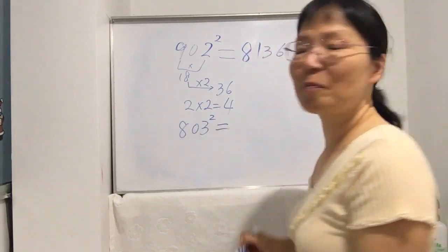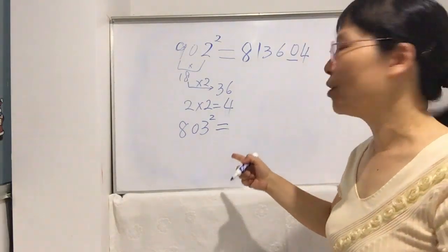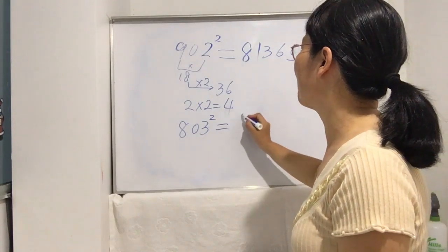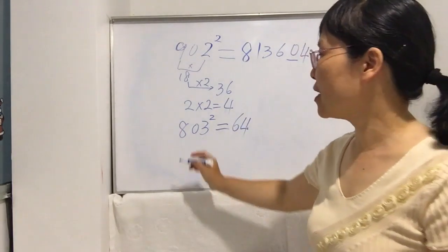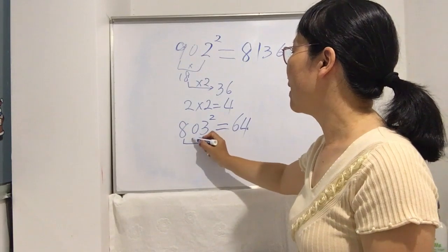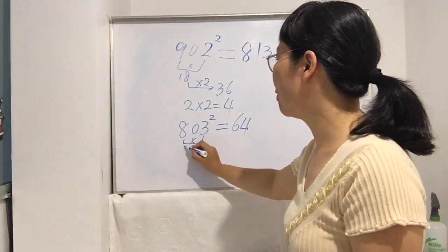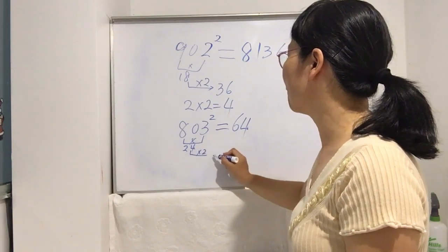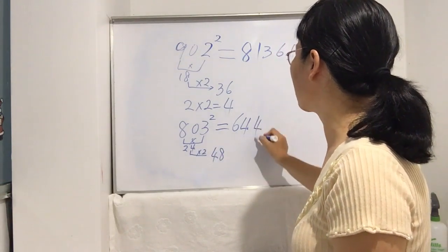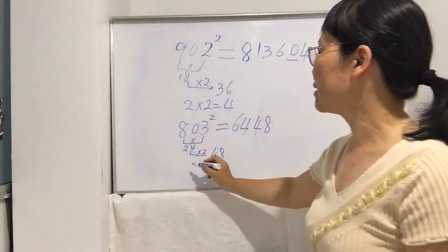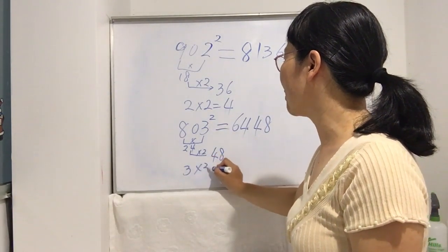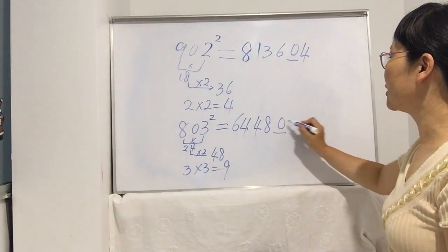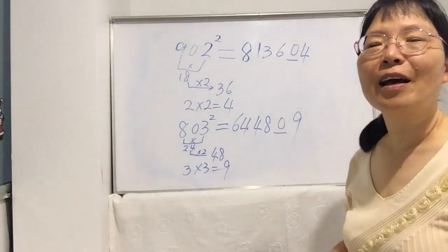Let me give you another one to practice: 803 squared. Eight times eight is sixty-four. The middle step: eight times three is twenty-four, double it — twenty-four times two is forty-eight. Write forty-eight in the middle. Last step: three times three is nine, but you also have to write a zero before the nine. That's the exact answer.